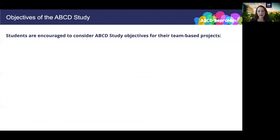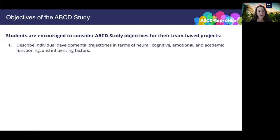Now I'd like to shift gears and talk to you about the ABCD study itself. As part of the NIH program that provides support and funding to ABCD Repronim, NIH would like for us to encourage students to thoughtfully consider the overall research objectives for the ABCD study when conceiving of their team-based projects. The first goal of the ABCD study is to describe individual developmental trajectories in terms of neural, cognitive, emotional, and academic functioning, and influencing factors.